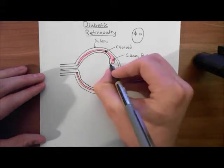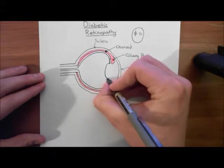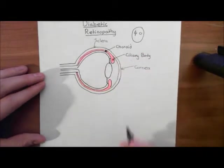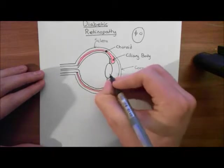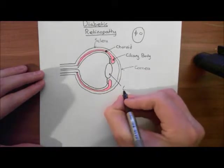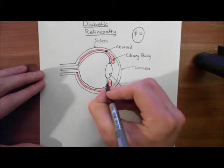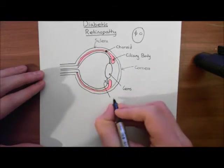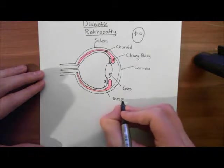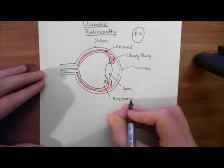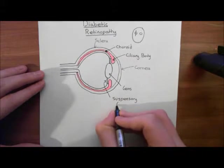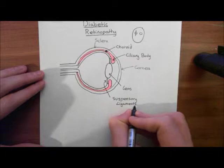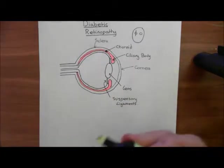So here, this is the retina coming around here, and then we'll have the suspensory ligaments, like so. I'll just draw two of them. And then we'll have the lens in here. There we go. I'm quite pleased with that. That's gone better than it would usually go. So this is the lens.